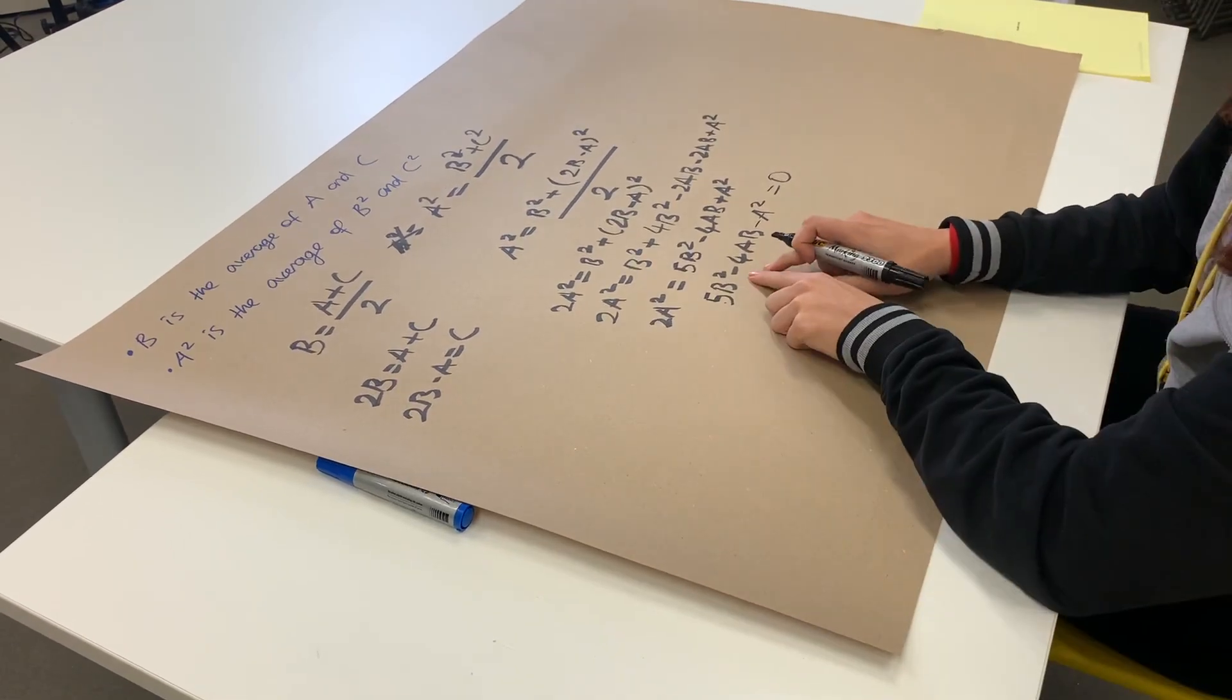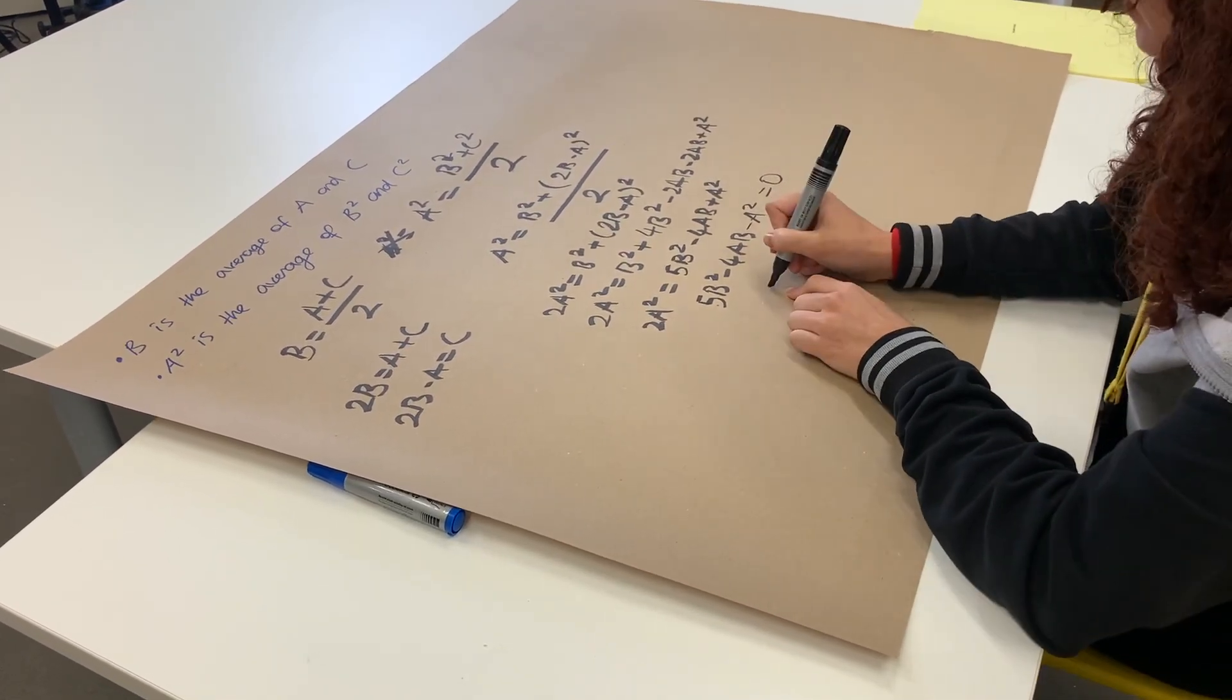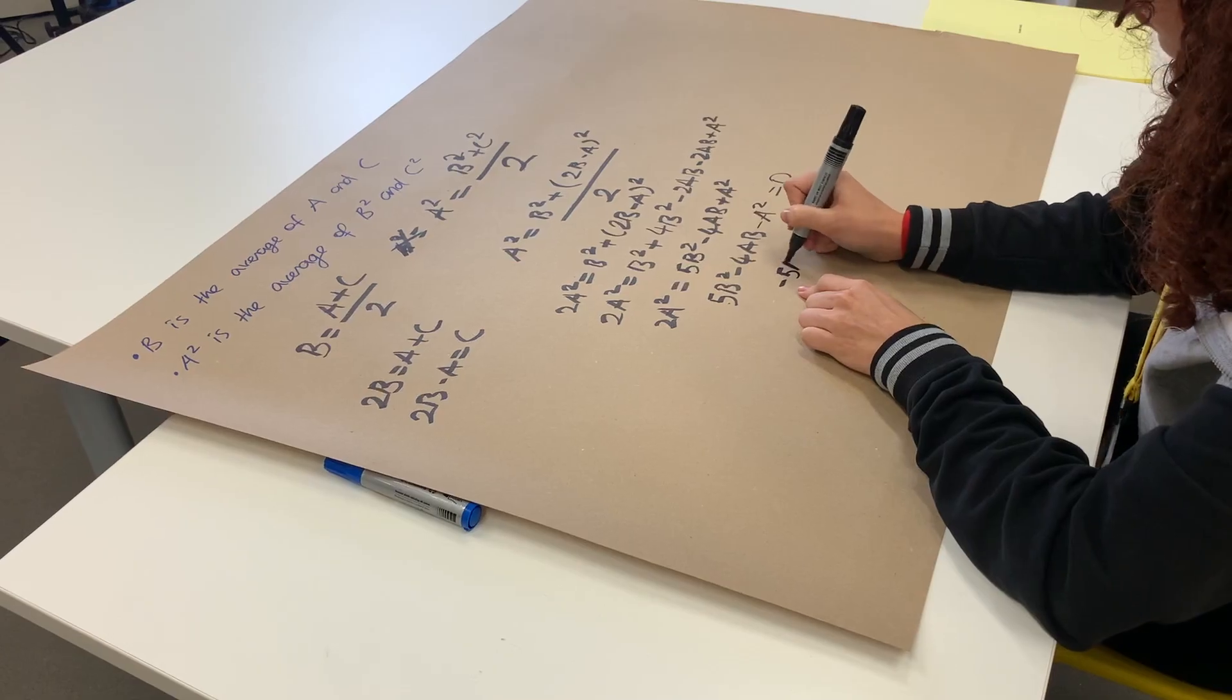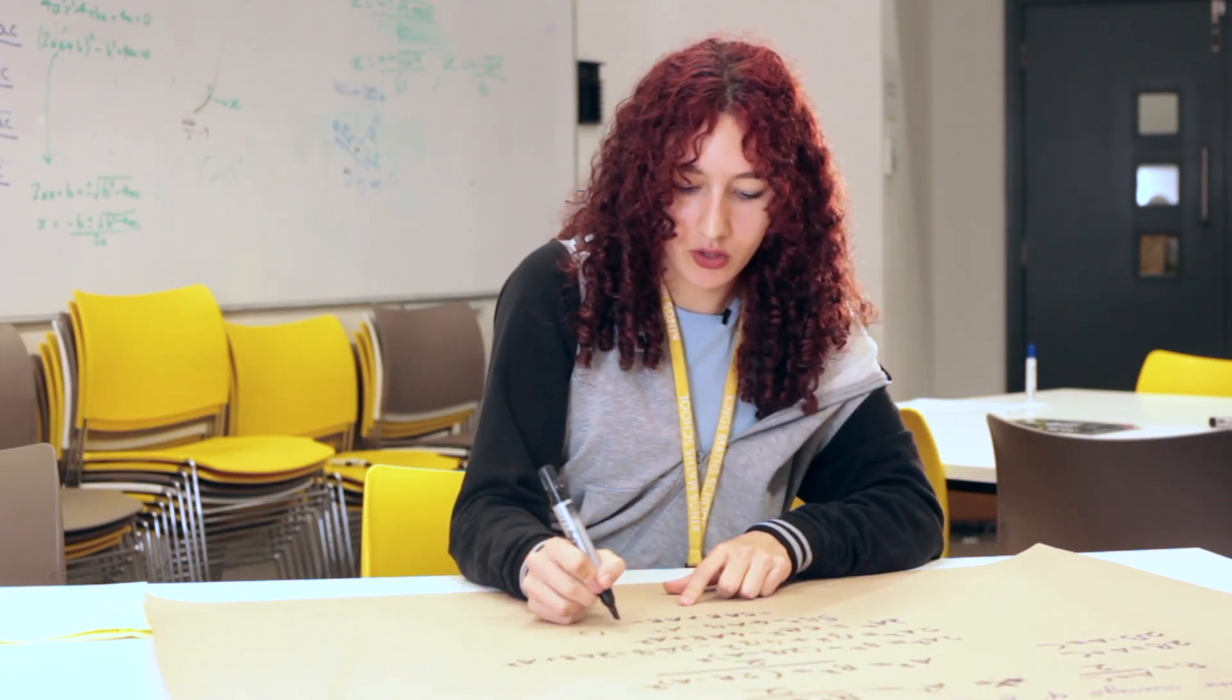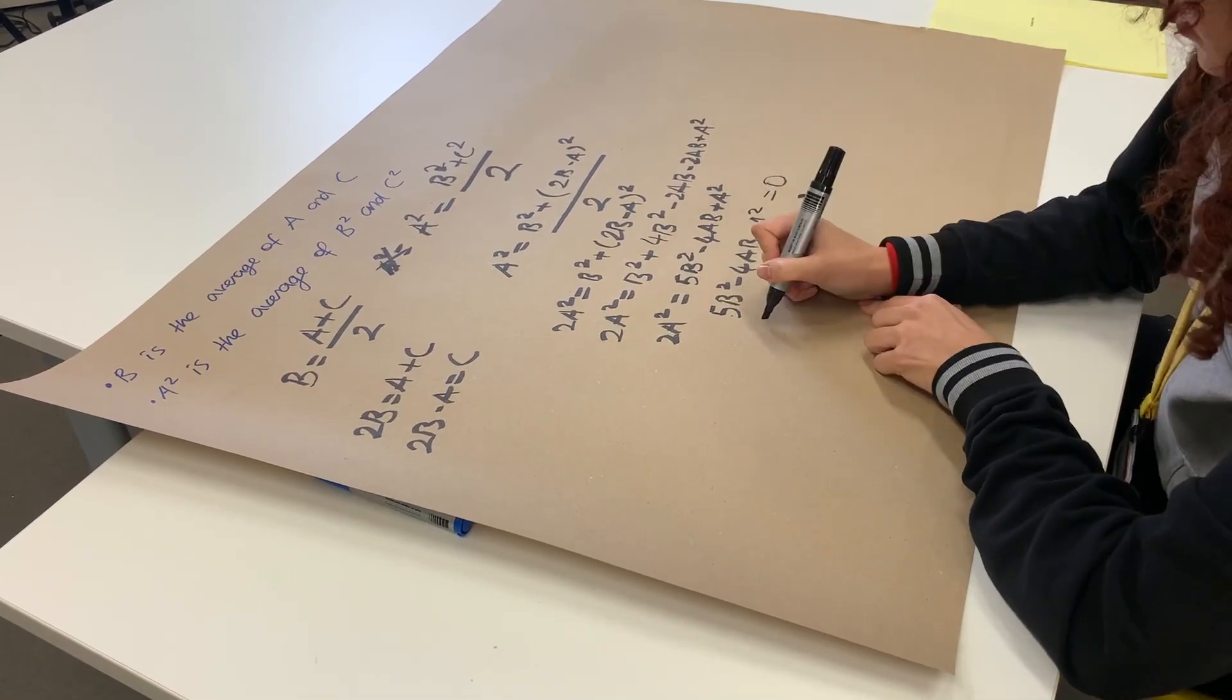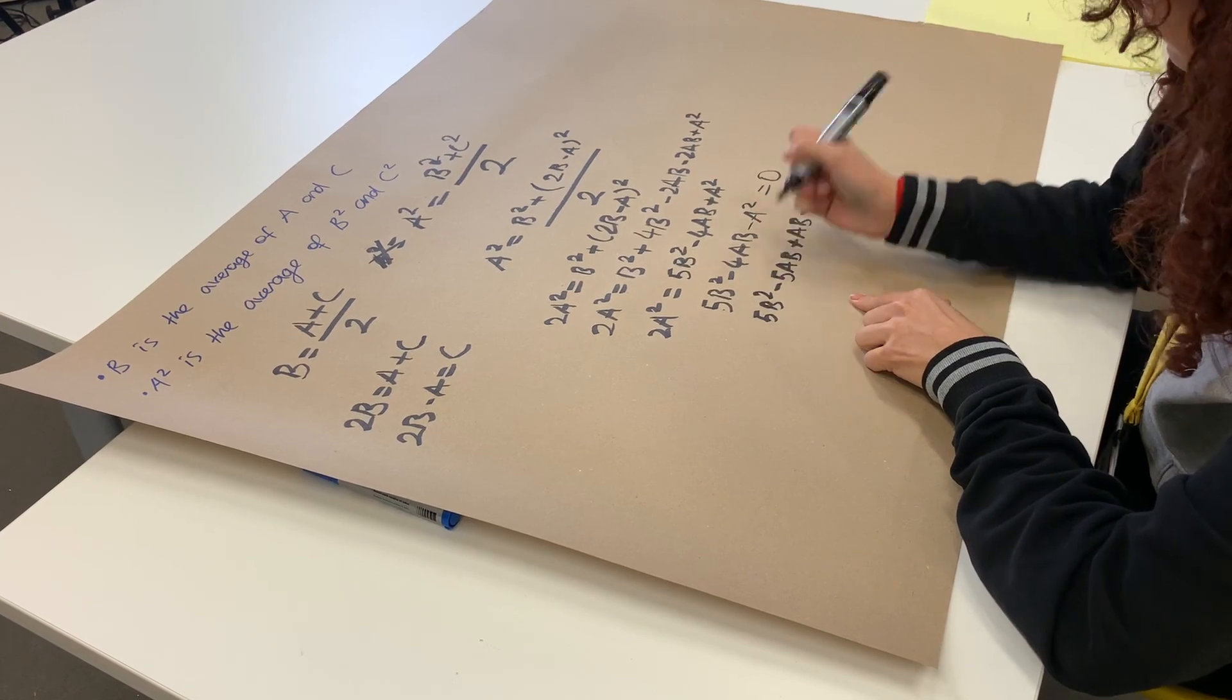So we can write minus 4AB as minus 5AB plus AB, because they add up to minus 4AB. And then you've got minus A squared and 5B squared is equal to zero.